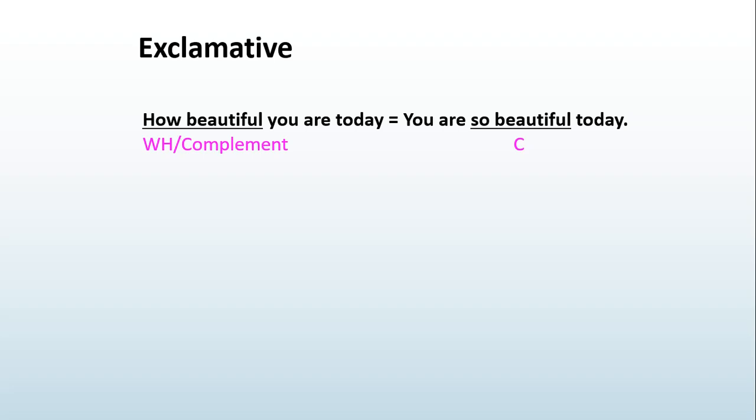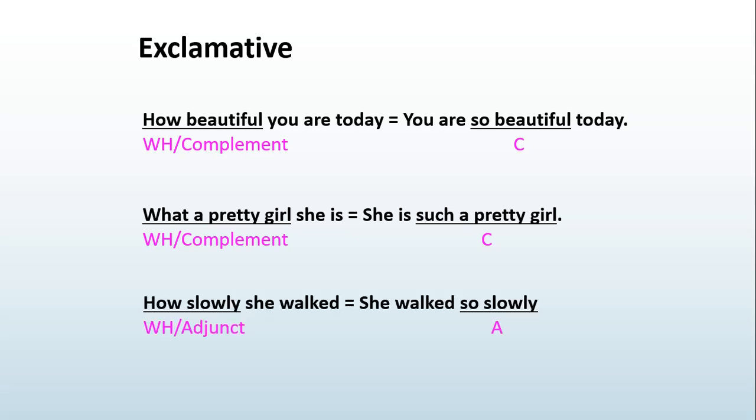In here, the how plus the adjective is the complement because if you change it into a declarative sentence, it will say you are so beautiful and beautiful is a complement. And what a pretty girl she is, when we reverse the sentence, it becomes she is such a pretty girl. So it means that the exclamative clause what a pretty girl, how beautiful, becomes the complement. The same as an adverb: she walks so slowly can be changed into the exclamative function how slowly she walked. That is why it is not a complement anymore, it becomes an adjunct.